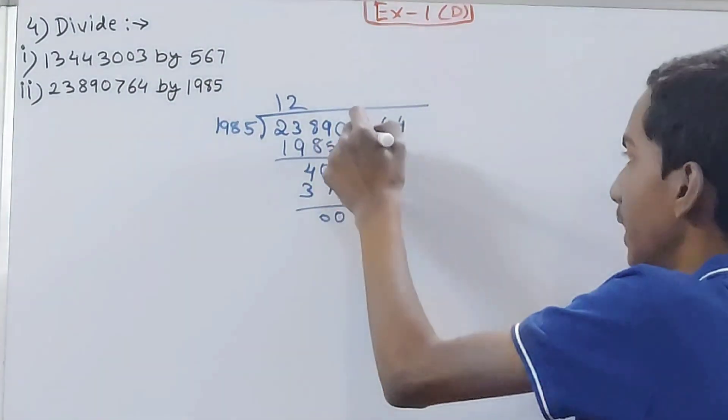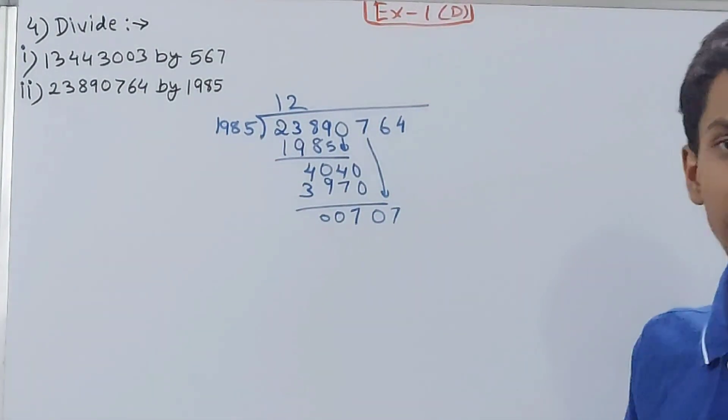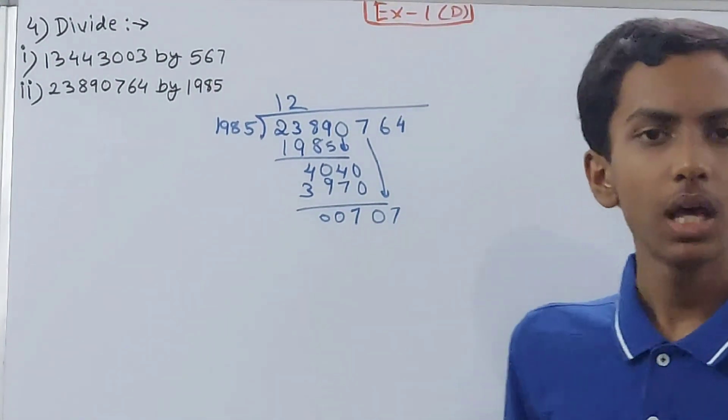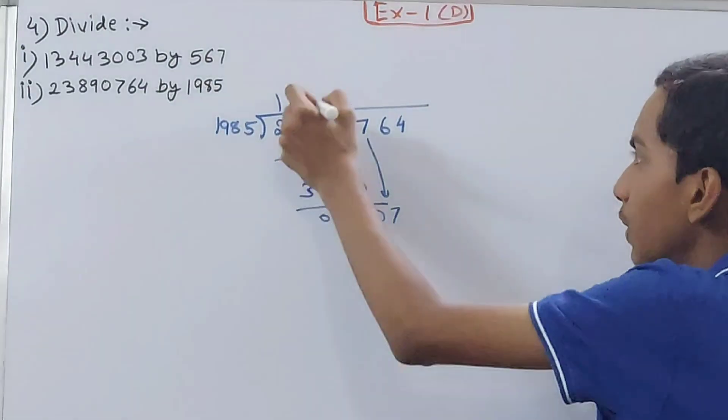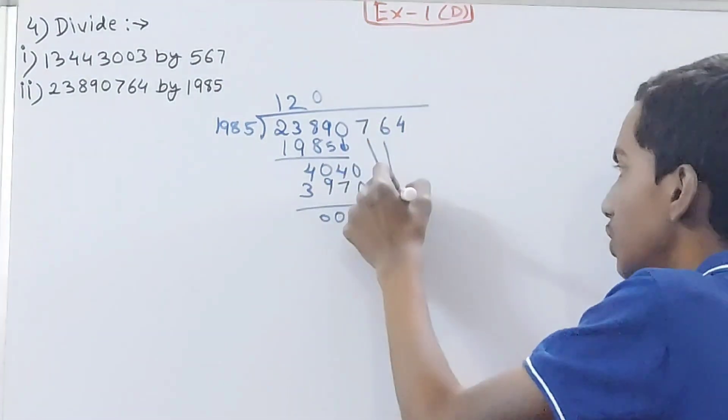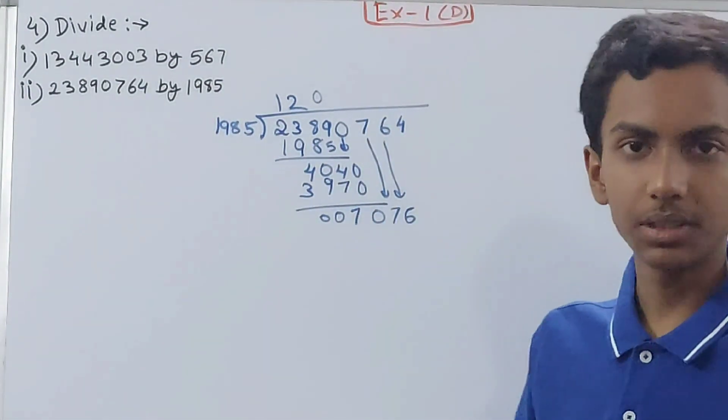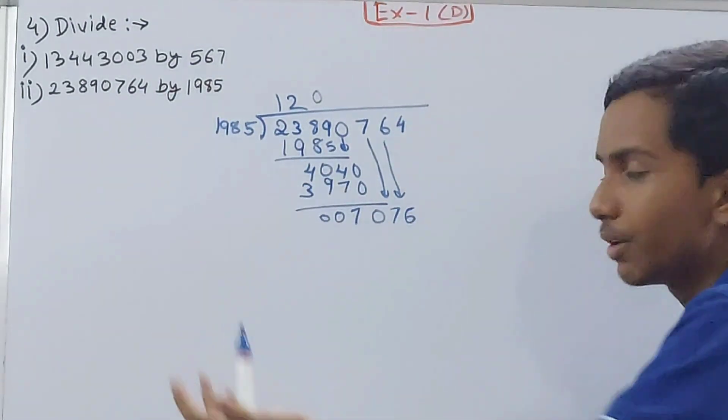Now bring down this 7. 707 and 1985. 707 is smaller than 1985, that means this will not be divided, so you will increase 1 zero in the quotient and bring down the next digit for the dividend. This is 7076.